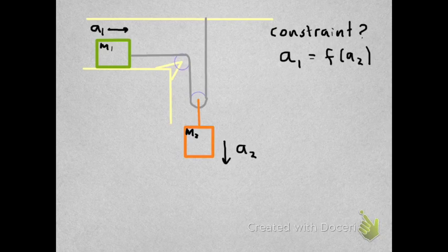In this slightly more complicated problem, we have block 1 and block 2 connected by a string. But notice that instead of one pulley, we have two pulleys. What we're looking to find here is a constraint equation between the acceleration of block 1 and the acceleration of block 2.